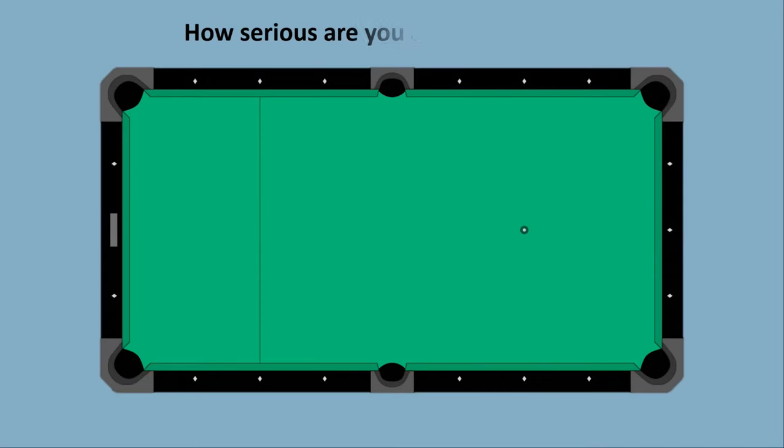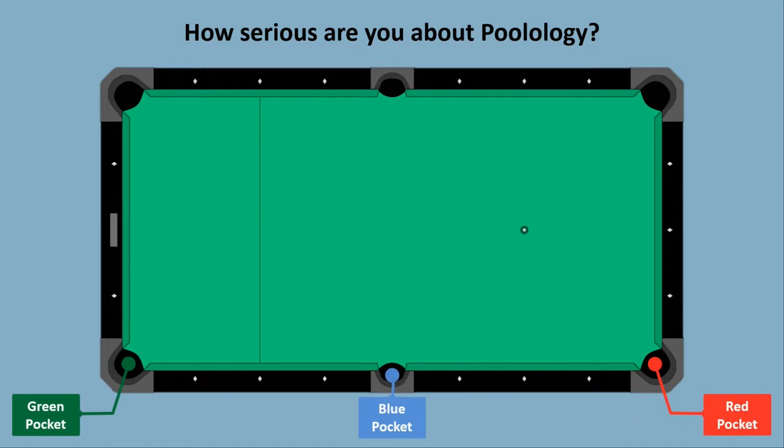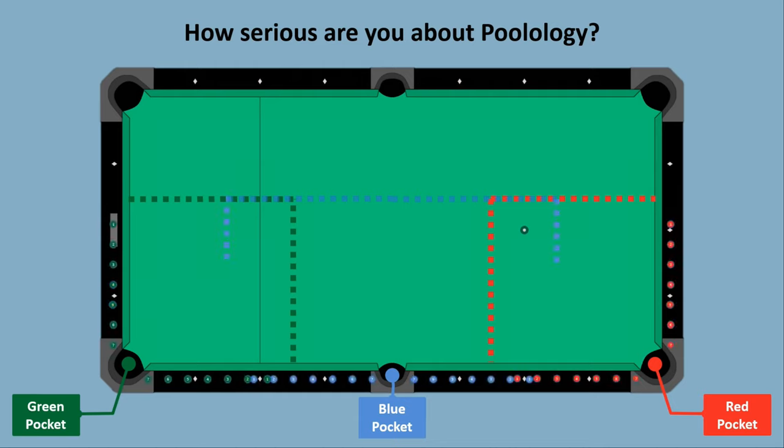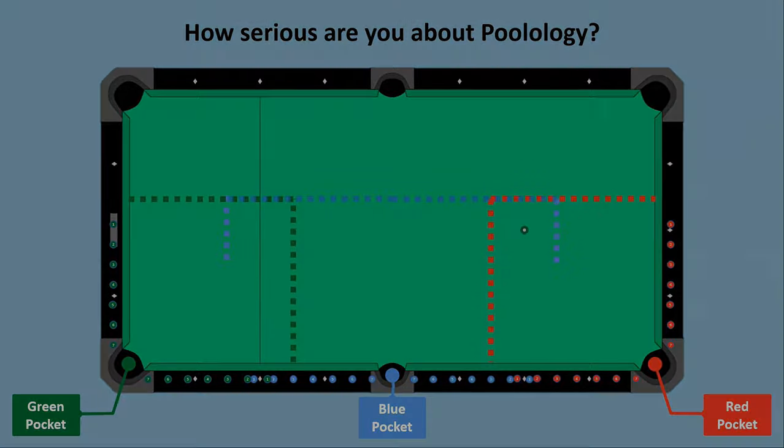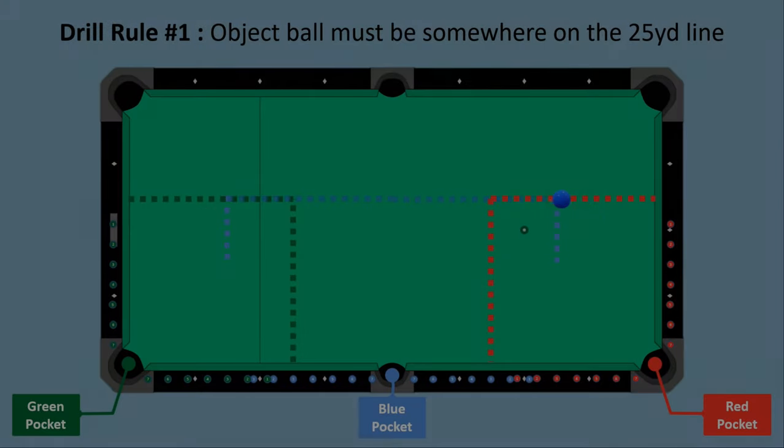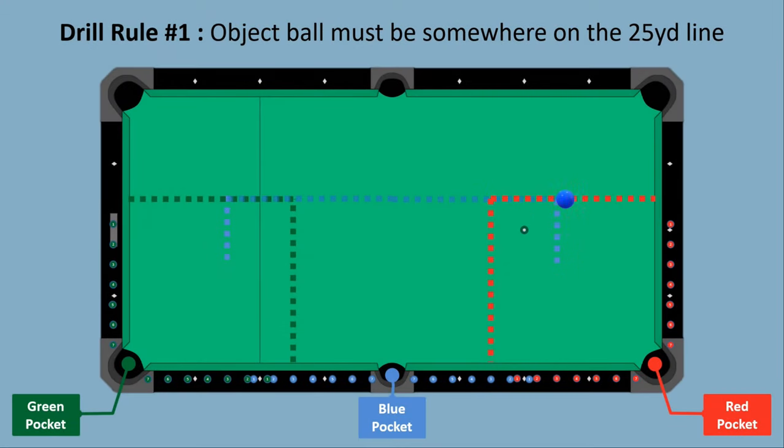It's time for you to decide how serious you are about integrating poolology into your game, because this is where the rubber meets the road and theory becomes reality. Bootcamp starts right now, and there's no turning back, because once you go all in on this drill, you can't help but see poolology every time you walk up to a table and get down on a cue ball. The drill is simple. There's only two rules to remember, and you get both object ball and cue ball in hand on every shot.